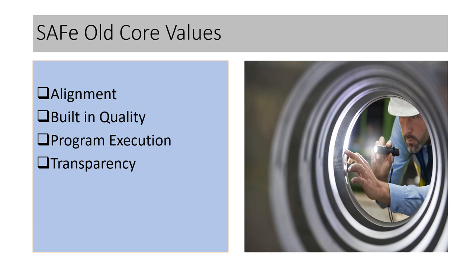When SAFe talked about alignment as a core value, it means that when multiple teams are involved in the SAFe implementation, those teams need to be aligned with the program and the portfolio — the vision, the business strategy, and the priorities. If the teams are not aligned, they will miss on the priorities and there will be gaps, and the objectives and goals at a program and portfolio level will be missed. So alignment is very much required when all teams are working together in the same ART or the same program objectives.